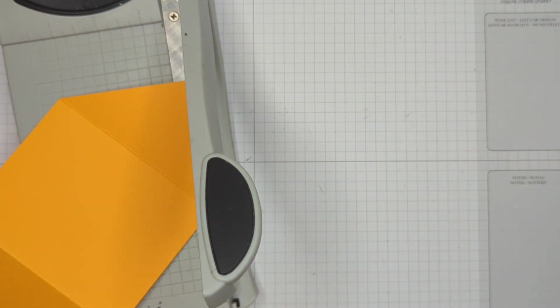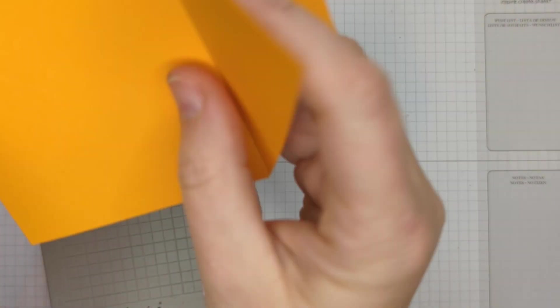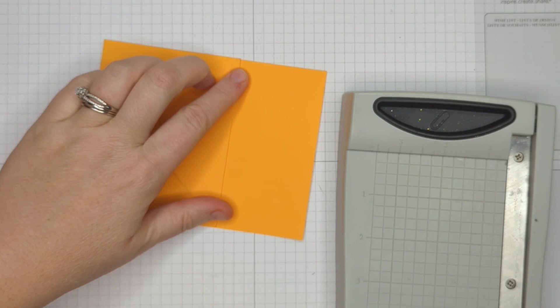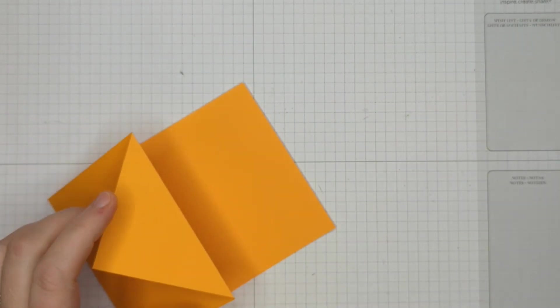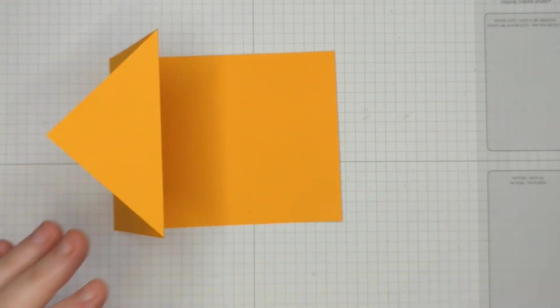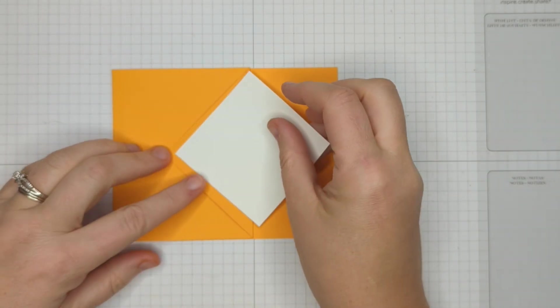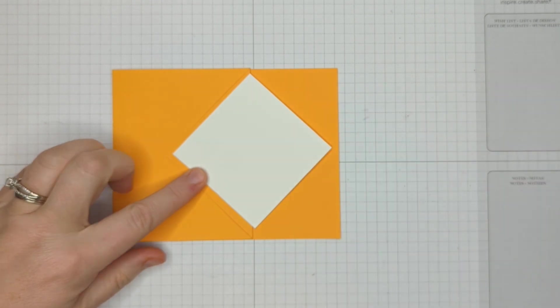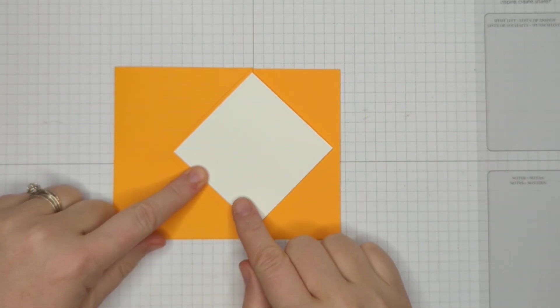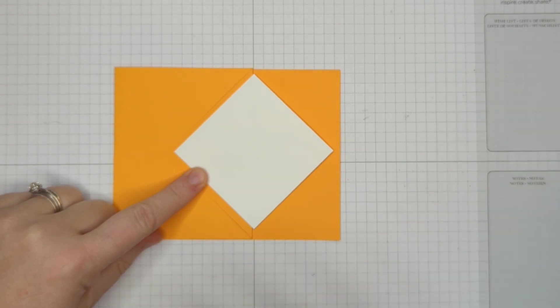And there you go. If you wanted to skip that step, you totally could, but this gives us our modified diamond. This is half of a diamond. And what we're going to do is we will adhere some white paper and decorative paper here to make that stand out and really emphasize that. That's it. That's the card base. So simple. So let's get decorating this.